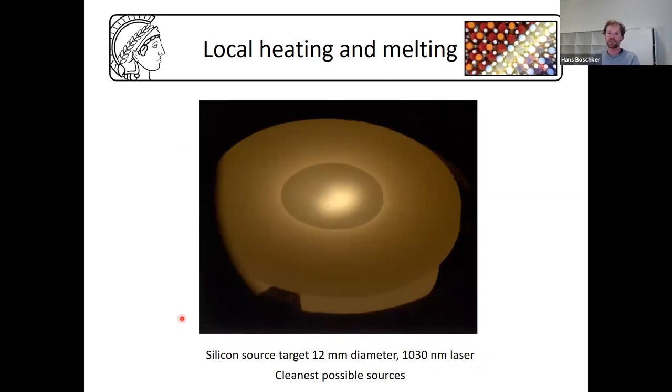This is what this looks like in practice with silicon. This is a picture taken during operation. The target is 12 millimeters in diameter and in the center you see this bright spot where the laser beam hits the target. This is the hottest spot in the system. Around that you see this darker area—the part of silicon which is molten. We are evaporating locally from the hottest point in the chamber and the molten silicon is contained by solid silicon. This gives us the cleanest possible sources because there is no contact to any crucible material and no surrounding elements which are hotter that could contaminate the deposition.